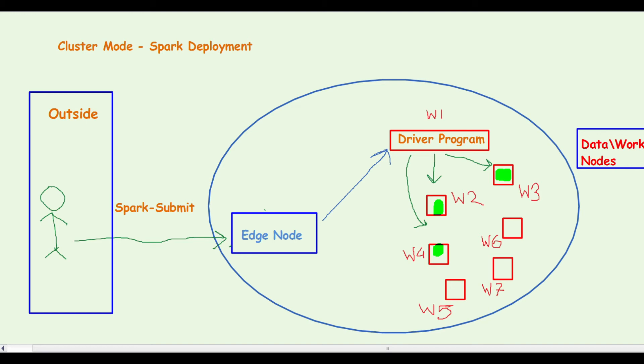And the driver program subsequently triggers the execution to happen on some of the other data or worker nodes based on the resources available. If a second user submits another Spark job, the same way the job will be submitted on the edge node and the driver program would be spawned in one of the available worker nodes based on the availability of resources.